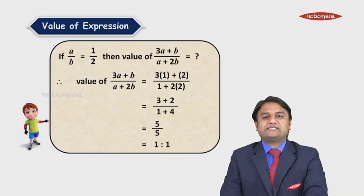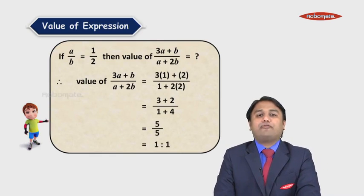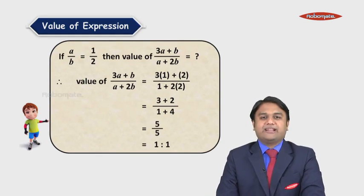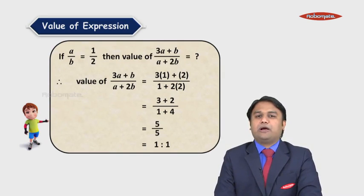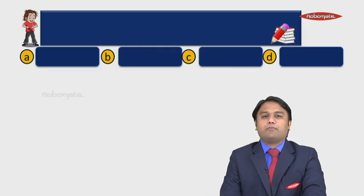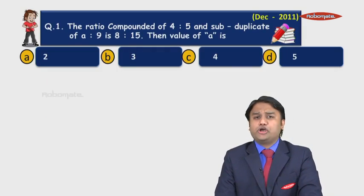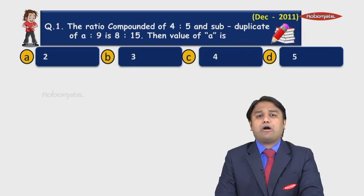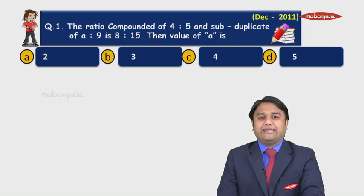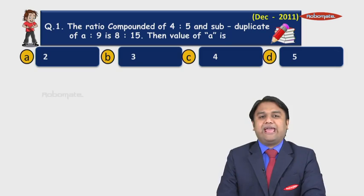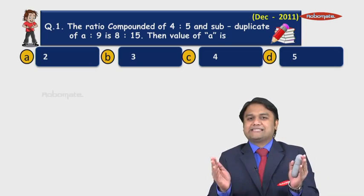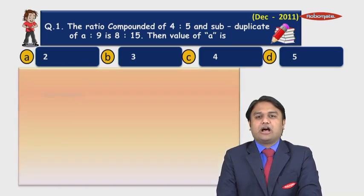That was your note on value of expressions. Now let us understand certain MCQs based on this module. MCQ number 1: The ratio compounded of 4 is to 5 and subduplicate of a is to 9 is 8 is to 15. The value of a is — options are as given on the screen.